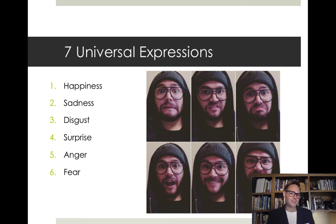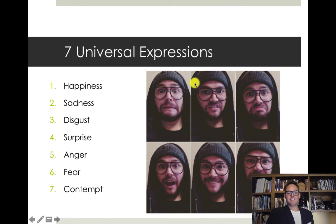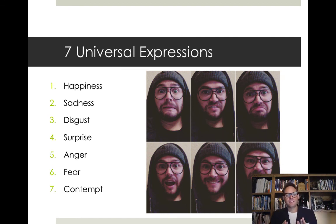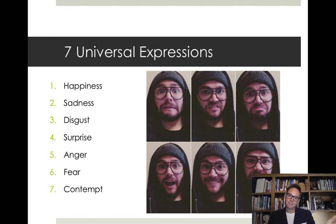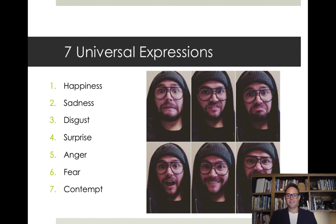Those are only six of the seven universal facial expressions. The seventh is contempt. The reason I only have six pictures is because disgust and contempt are usually similar in expression. The way I like to conceptualize it: contempt is essentially disgust directed at someone or something—the whole eye-rolling, showing disgust or disapproval.